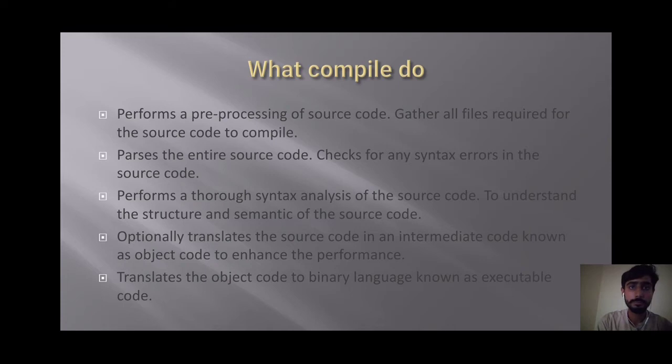What compiler do? Performs preprocessing of source code, gathers all files required for the source code to compile. Traces the entire source code, checks for any syntax error in the source code. Performs a thorough syntax analysis of the source code to understand the structure and semantic of source code. Operationally translates the source code into an intermediate code known as object code to enhance the performance. Translates the object code to binary language known as executable code.